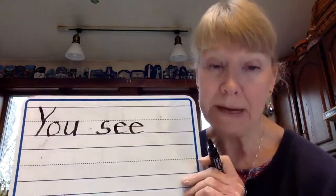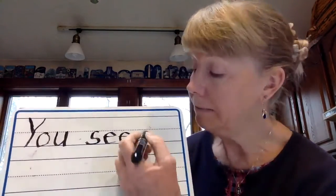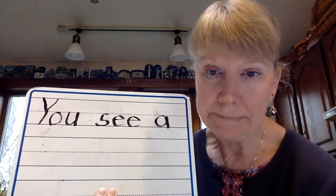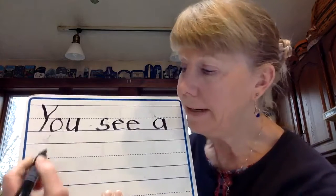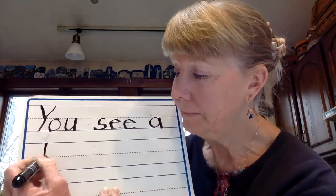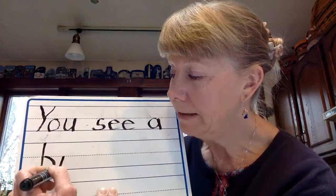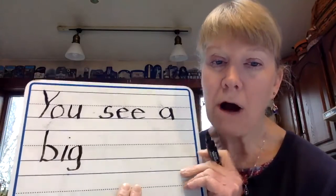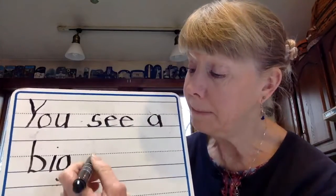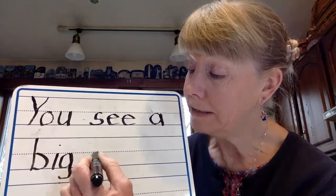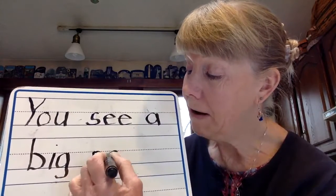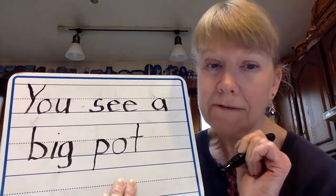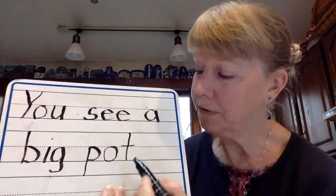Space. 'A', that's an easy one. 'Big'. Big. 'Pot'. I need to remember a space. Pot. 'Of', another kindergarten word. Leave a space.